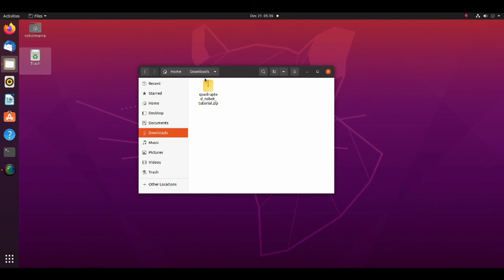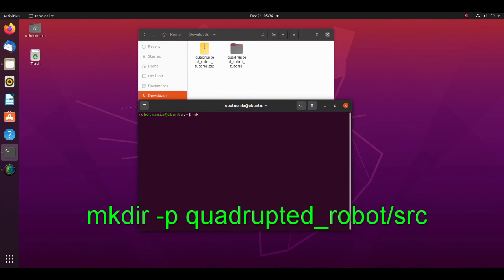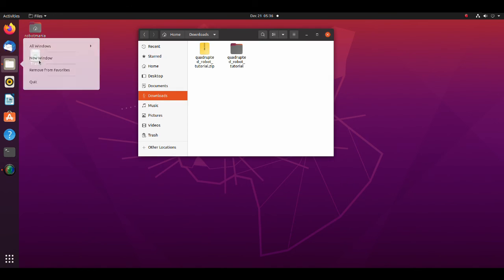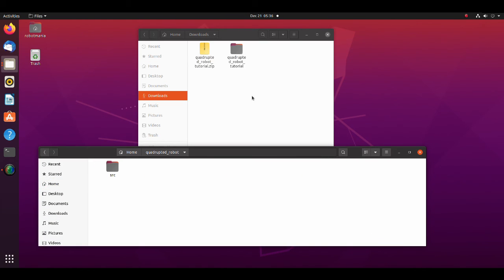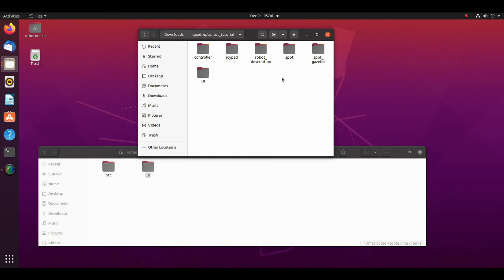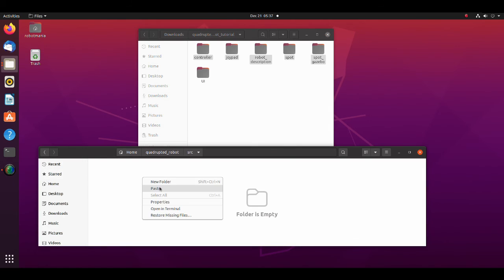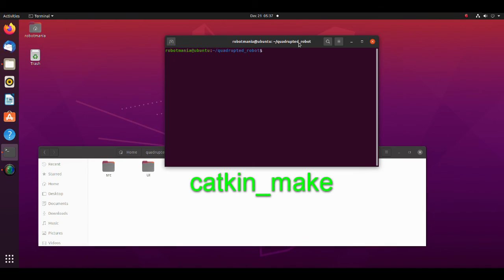To launch this simulation, first, download the zip file from Google Drive using the link in the description below. Extract the file. Open a terminal and create a workspace. Move UI folder to your workspace and other packages to the source folder.